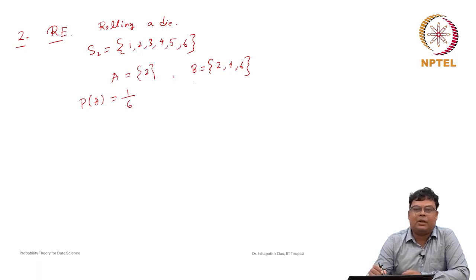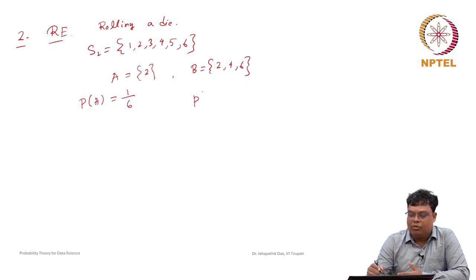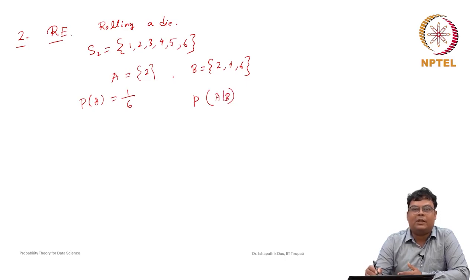Now suppose this information is given to us: someone says the die is rolled and an even number was observed. With this information, probability of any odd number — 1, 3, or 5 — is now 0, because we already know it is an even number. And the probability of any even number: what is the probability that 2 will appear? Now the sample space has changed to {2, 4, 6}, which contains only 3 equally likely points, so the probability of 2 appearing is 1 out of 3.